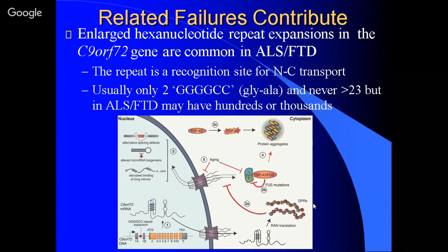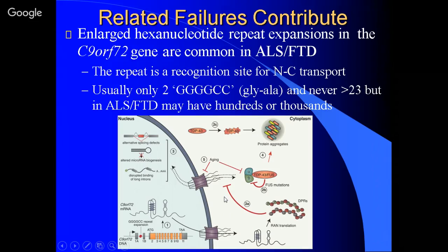C9orf72 is interesting because what happens is you end up with a long hexanucleotide repeat — GGGGCC — which translates into glycine-alanine. C9 is normally a low-complexity domain repeat, usually never exceeding 23. In ALS patients with the C9 mutation, you get hundreds or even thousands of these repeats, and that can't be good. People dependent on this protein to get in and out of the nuclear pore will have their low-complexity domain completely disrupted.